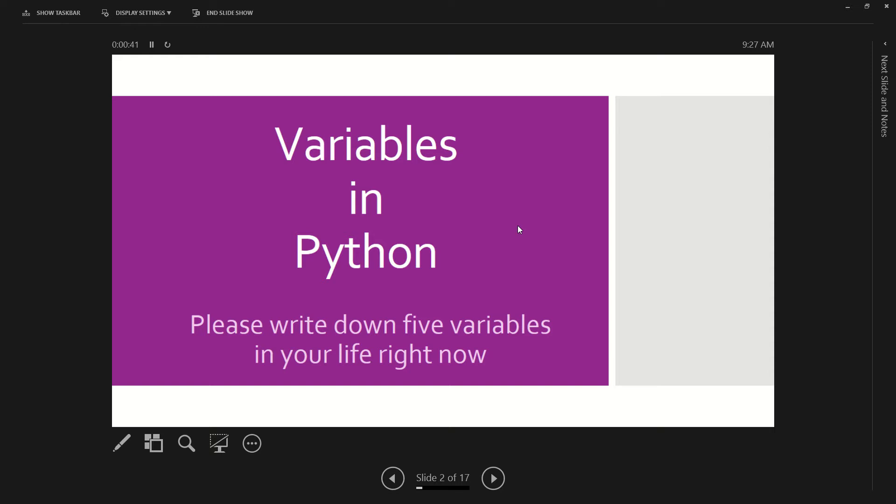The first thing I want you to do, if you need to pause the video that's fine, but please write down five variables in your life right now. For an example, you can use this one as one of your five. A variable in all of our lives is the weather. It's never the same, especially in Utah. You never know what you're gonna get.